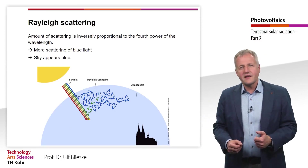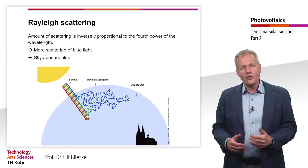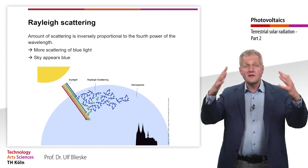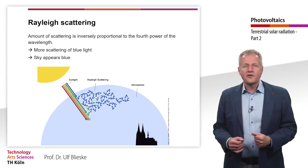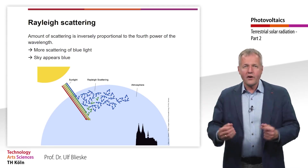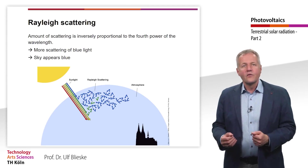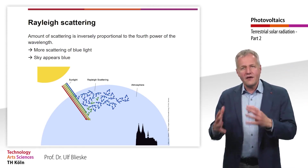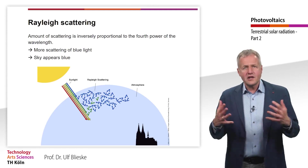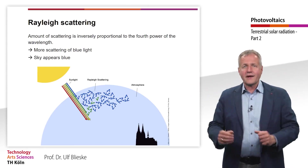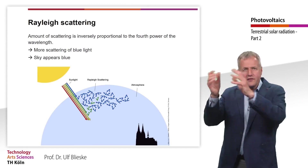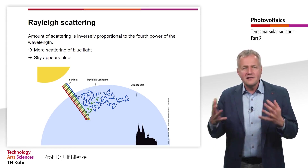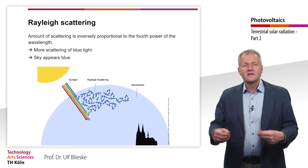To fully understand Rayleigh scattering would require going quite deep into electromagnetic processes. For this teaching unit, it is sufficient to know that Rayleigh scattering takes place at molecules in the upper atmosphere, and that the amount of scattering is inversely proportional to the fourth power of the wavelength. Hence, blue light at 400 nm is scattered ten times more than red light at 700 nm. The scattered light is emitted in all hemispheric directions, so observers on the ground see scattered light from all directions — and since this scattered light is mainly blue, the sky appears blue.